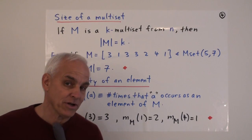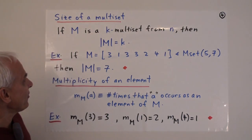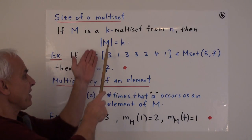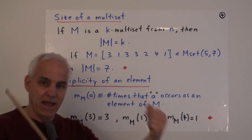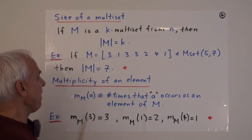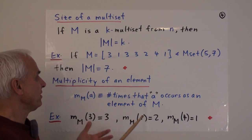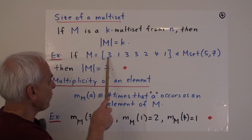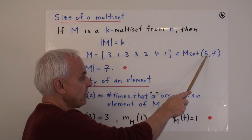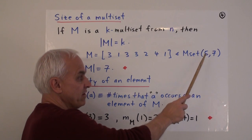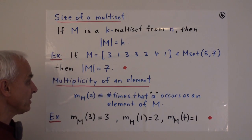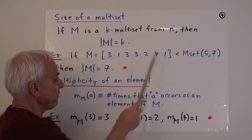A natural notion associated to multisets is the notion of size. So, if m is a k-multiset from n, then we say that its size is k, because it has exactly k objects inside it. And we use this absolute value kind of notation to denote size. So, for example, if m equals [3,1,3,3,2,4,1], that's an Mset(5,7). So if it's a seven multiset from five, then the size of m is seven.